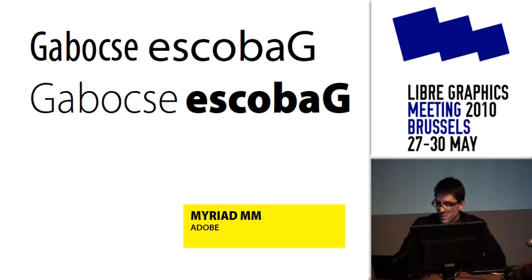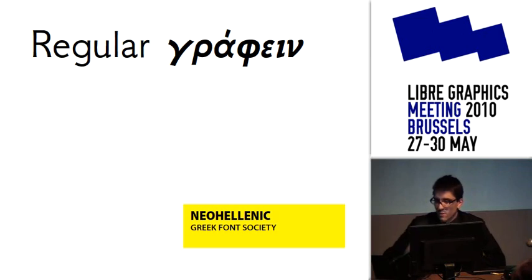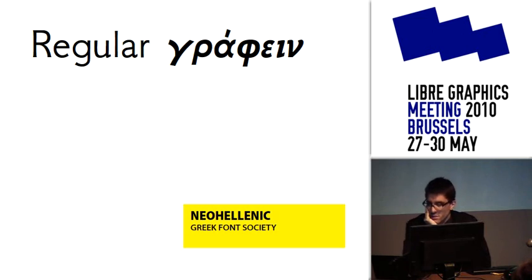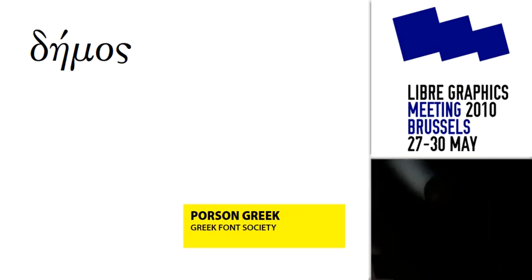Finally, I want to mention two more fonts that are not for Latin but for Greek, from the Greek Font Society. They've put out a number of really excellent designs. Neo-Hellenic is quite a famous design — when we look at it we think it's sort of a sans serif, but Greek doesn't have this concept of a serif or sans serif. It was digitized by the Greek Font Society in the early 90s, originally from a design in 1927, and now it's available to us. Another one from the Greek Font Society is Porson Greek, originally designed at the turn of the 19th century and released by Monotype in 1913.